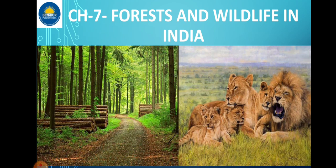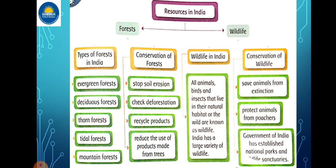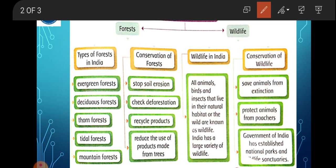Now let's get started with this chapter — Resources in India: Forests and Wildlife. First, the types of forests. How many types of forests are there? There are five types: Evergreen Forests, Deciduous Forests, Thorn, Tidal, and Mountains. These are the 5 types of forests which we are going to study in this chapter.